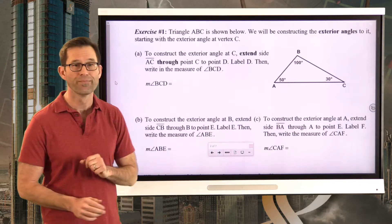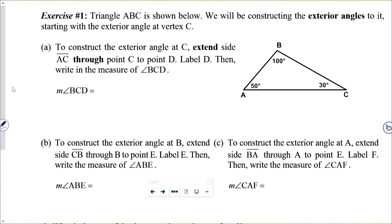Exercise number one. Triangle ABC is shown below. We will be constructing the exterior angles to it, starting with the exterior angle at vertex C. To construct the exterior angle at C, extend side AC through point C to point D, then write the measure of angle BCD.